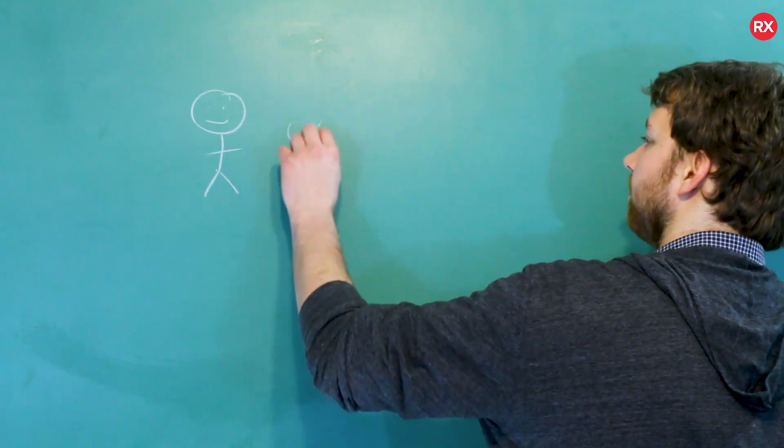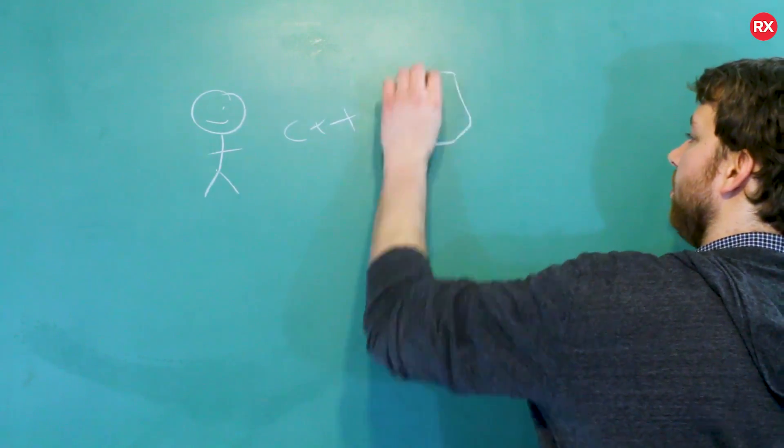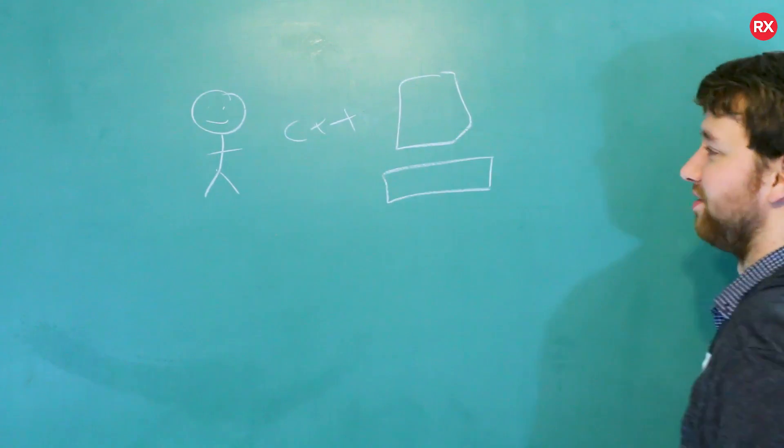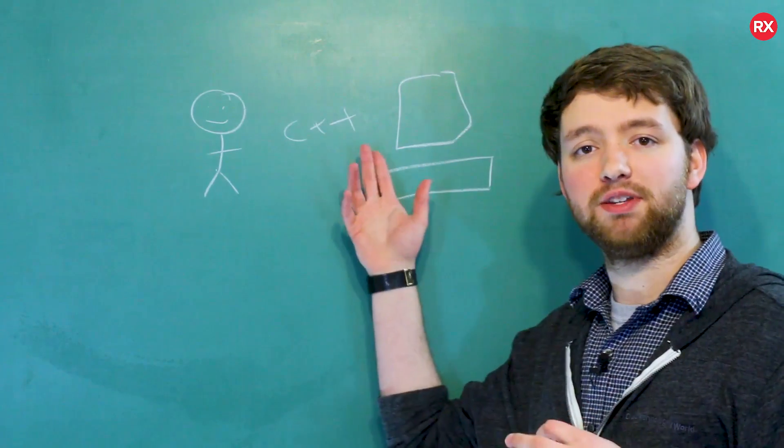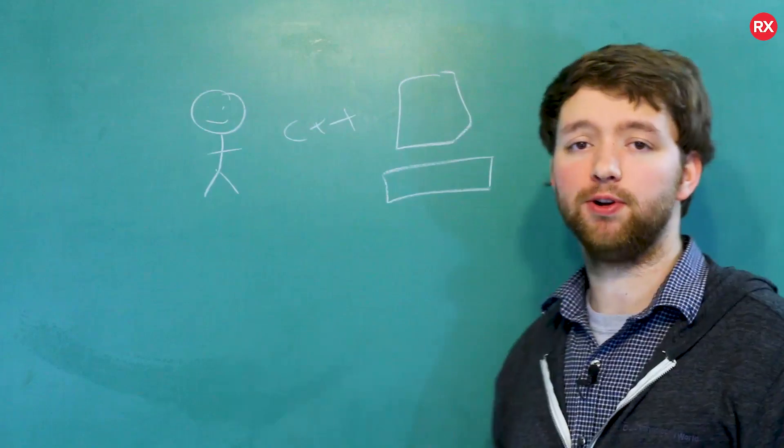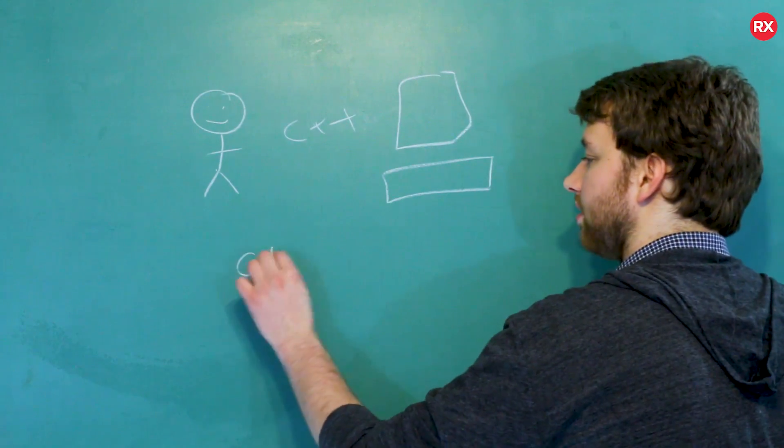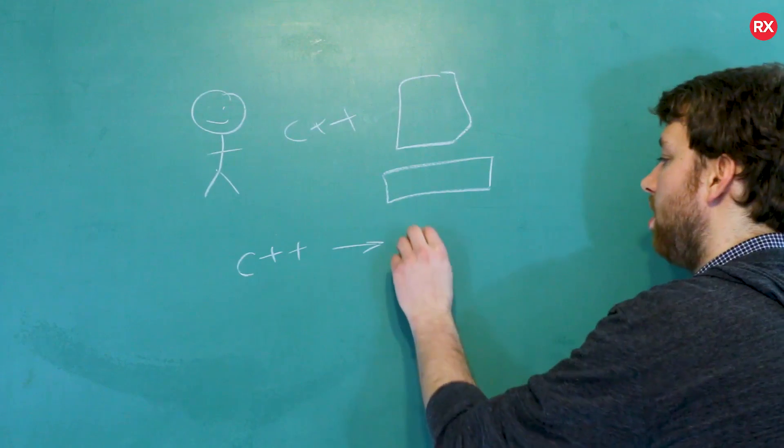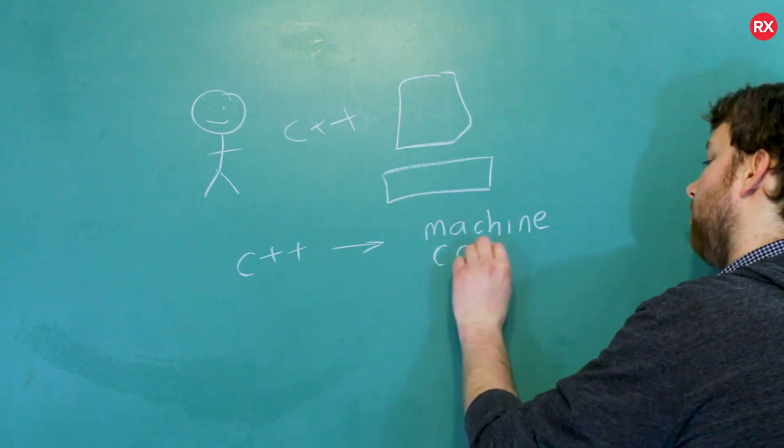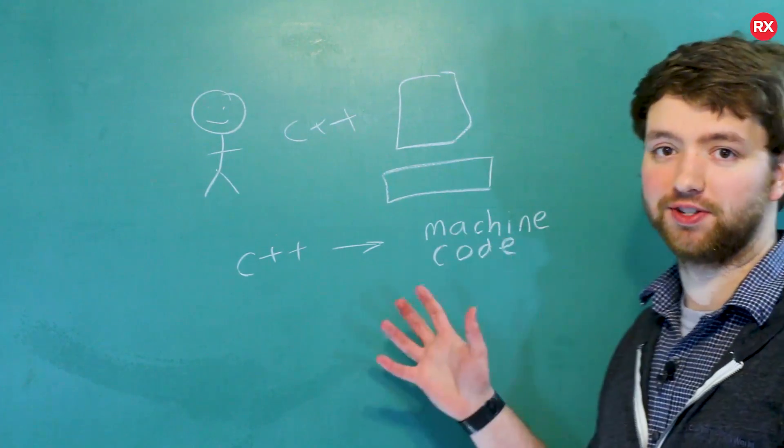So we code in C++ and we do that on a computer. But in order for the C++ to be understood by the computer, it needs to be compiled. So compiling is when we take C++ code and it becomes machine code, which is what the computer can understand.